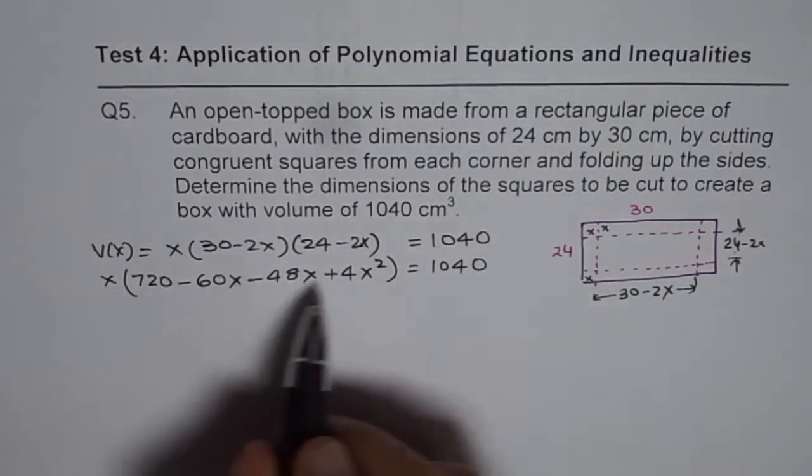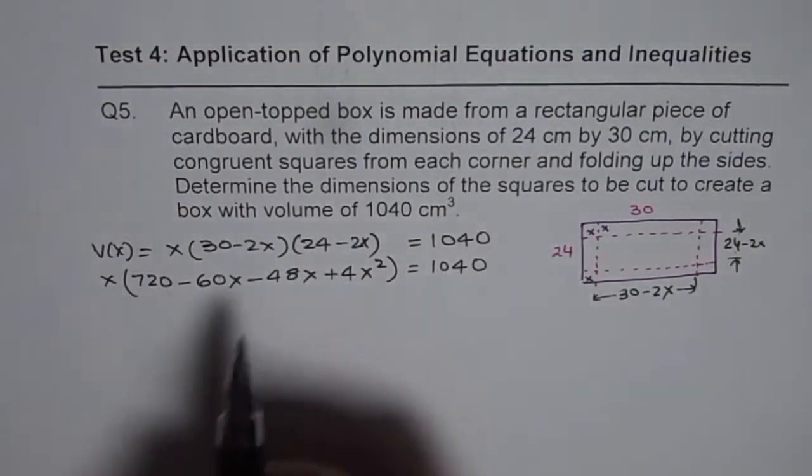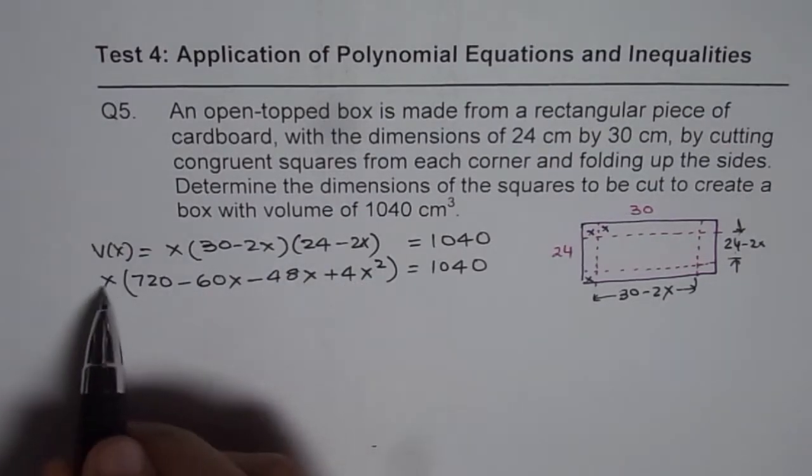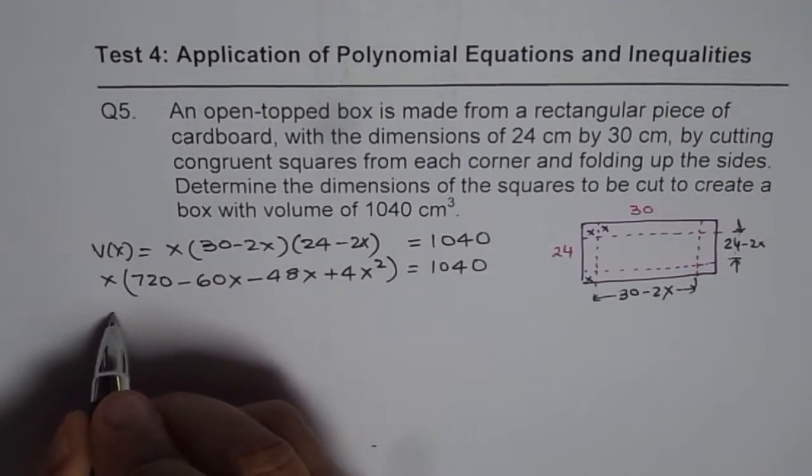Now, we can open this bracket. Rearrange the terms. So, good idea to always write with highest degree first. So, x times 4x square will give me 4x cube. Let me write 4x cube first.